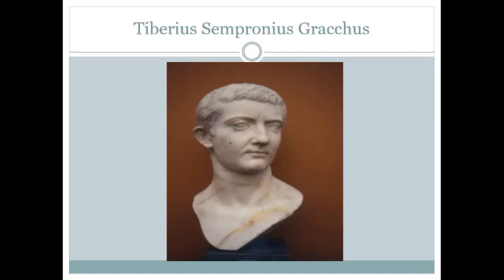His father had been a very prominent man. His father-in-law, Publius Claudius Pulcher, was the princeps senatus — essentially the speaker of the house, the oldest living senator who had the right of speaking first on all issues. His mother was the daughter of Scipio Africanus, the defeater of Hannibal. His brother-in-law was Scipio Aemilianus, the conqueror of Carthage.